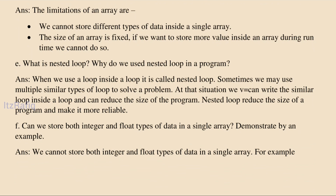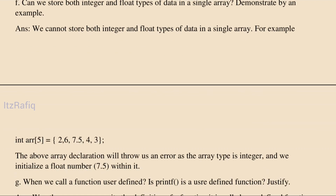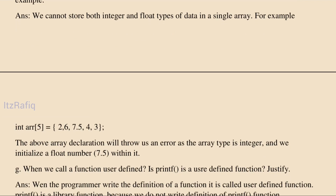Can we store both integer and float in the same array? No, we cannot, because an array can store only one type of information. If we try to store mixed types, it will return an error for invalid type.